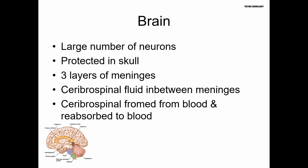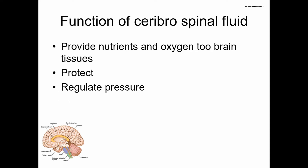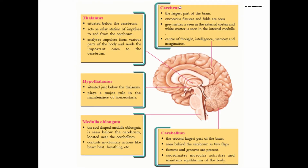The brain is protected by three layers of meninges. These meninges are bathed in cerebrospinal fluid, which cushions and protects the brain. The cerebral cortex has gray matter on the outside and white matter inside. It is responsible for functions like imagination and intelligence.